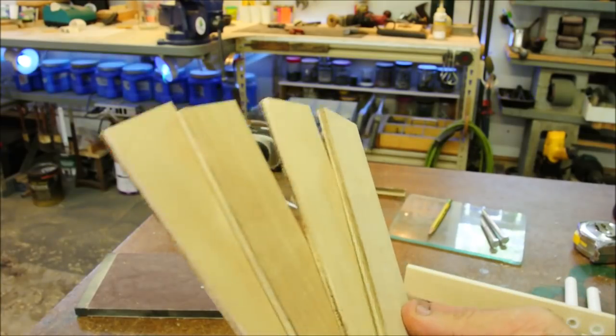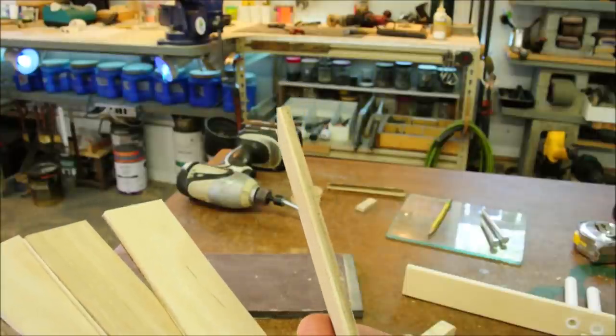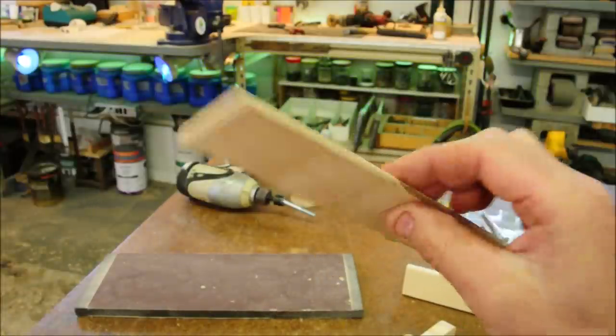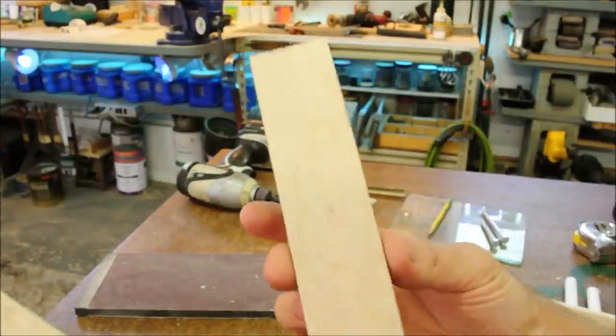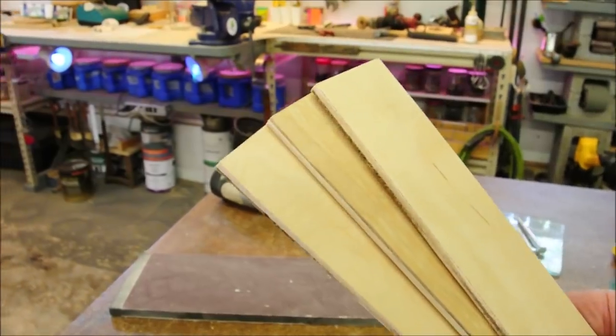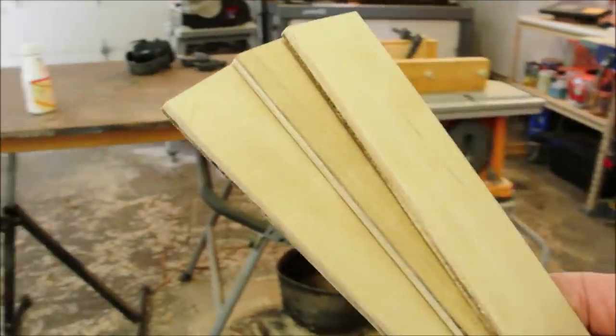First thing you'll need to do is rip down some plywood. Here I'm using something like a three ply underlayment, it's about a quarter of an inch thick.